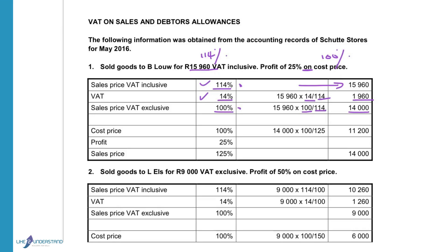When we calculate the cost price, we must use the sales price excluding VAT because the cost price does not include VAT. The sales price is therefore 14,000. They told us the profit is 25% on cost price, so cost price equals 100%, profit 25%, sales price 125%. We calculated that 125% equals 14,000. So for the cost price: 100 divided by 125 gives us 11,200.